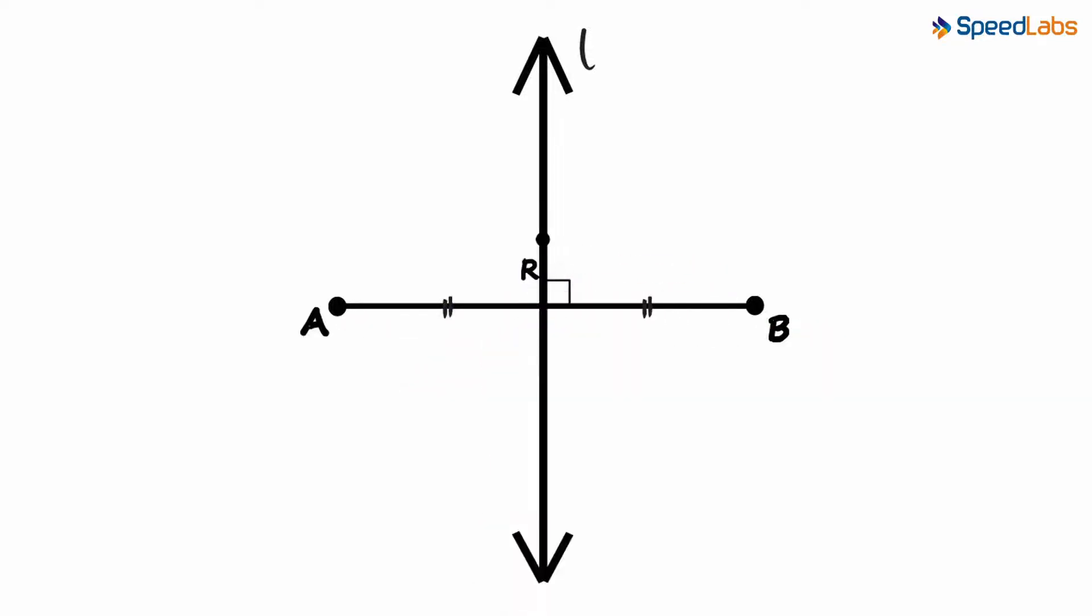Now consider a point R anywhere on the perpendicular bisector. The distance at this point from the endpoints of the segment will always be equal. It means AR will always be equal to BR. That's the beauty of perpendicular bisectors.